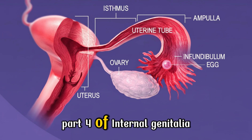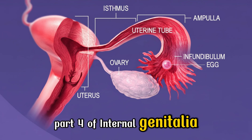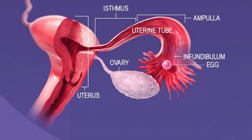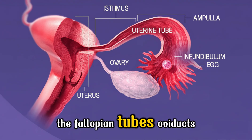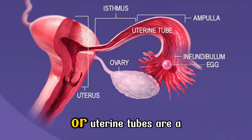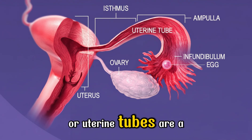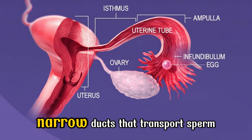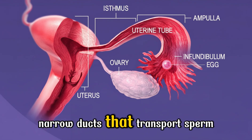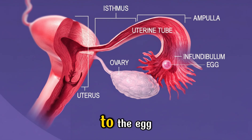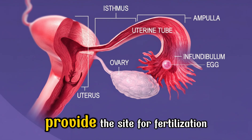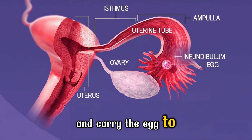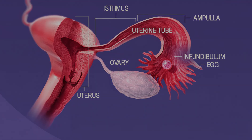Part 4 of internal genitalia: the fallopian tubes. The fallopian tubes — also called oviducts or uterine tubes — are a pair of long, narrow ducts that transport sperm to the egg, provide the site for fertilization, and carry the egg to the uterus.